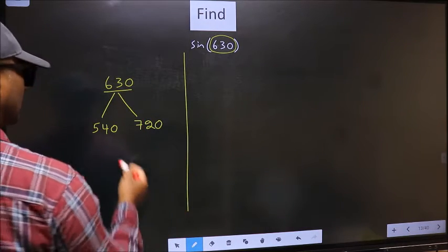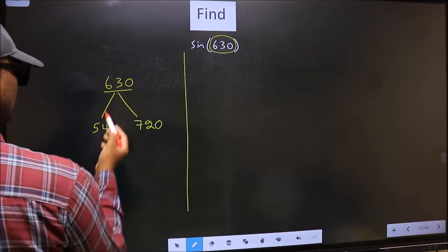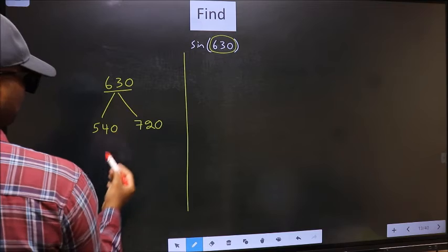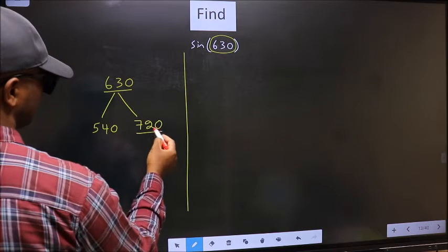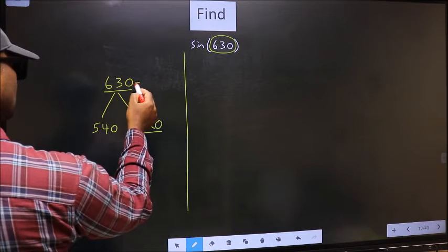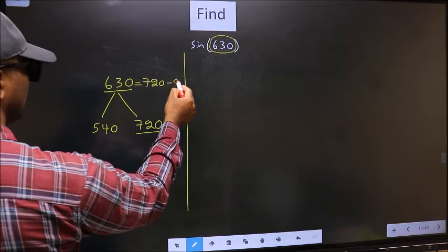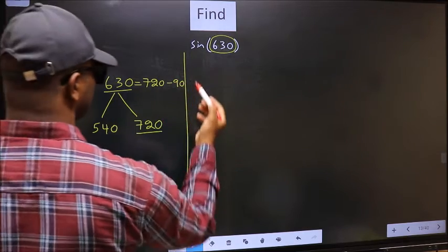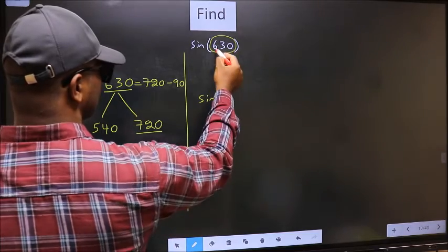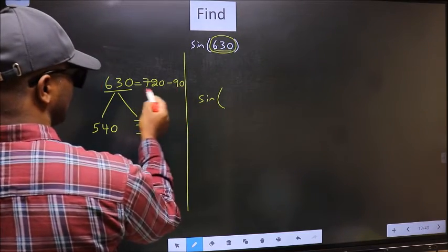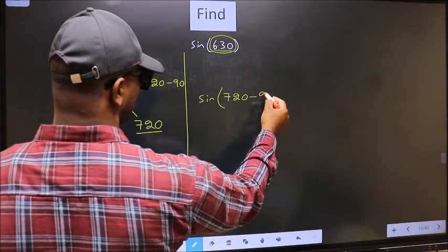Next. Now 630 is close to which number? This is equally close to both of them. So you select any one number. Let us say I select 720. So now 630 should be written as 720 minus 90. So this will become sine. In place of 630, now we should write this 720 minus 90.